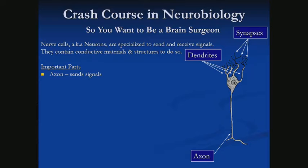The axon is sort of the output. We'll write a function that defines what a neuron does. We can think of the axon as being the return — the result of that function. The dendrites are the inputs; that's where we get information into the neuron. They pick up signals from things.